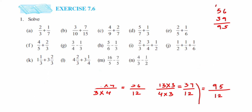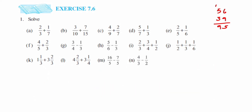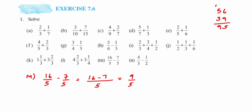The next problem is a simple subtraction: 16 upon 5 minus 7 upon 5. The denominators are the same — both are 5 — so we simply subtract the numerators: 16 minus 7 is 9. The answer is 9 by 5. We cannot cancel further, so we leave it here.